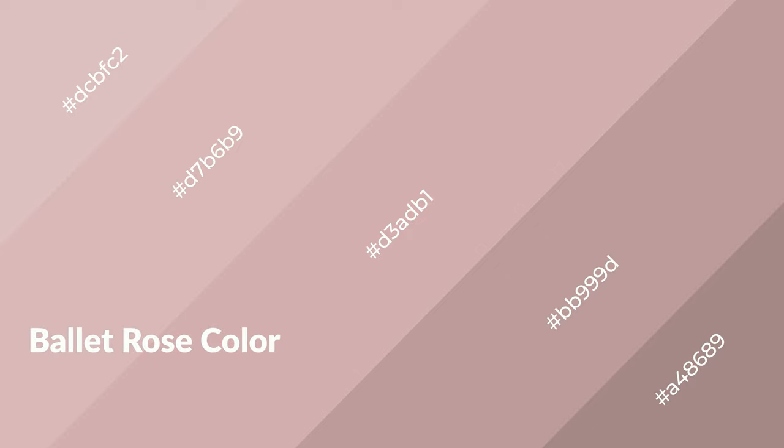To generate shades of a color, we add black to the color, and it is used in patterns and 3D effects. Layers and shades create depth and drama. Ballet rose is a warm color and it emits cozier and active emotions.